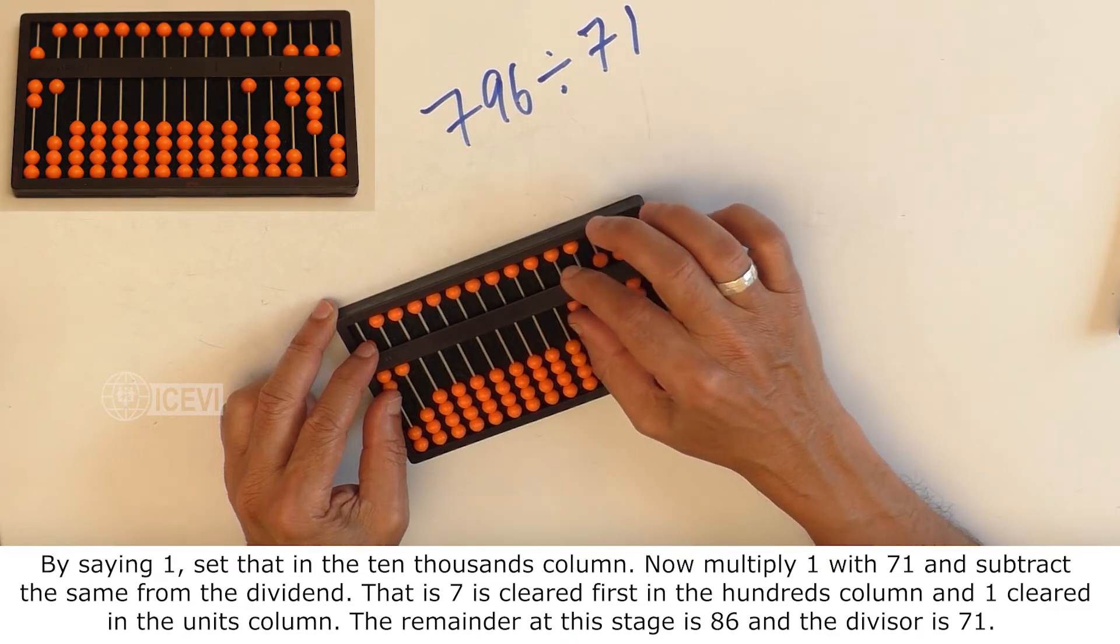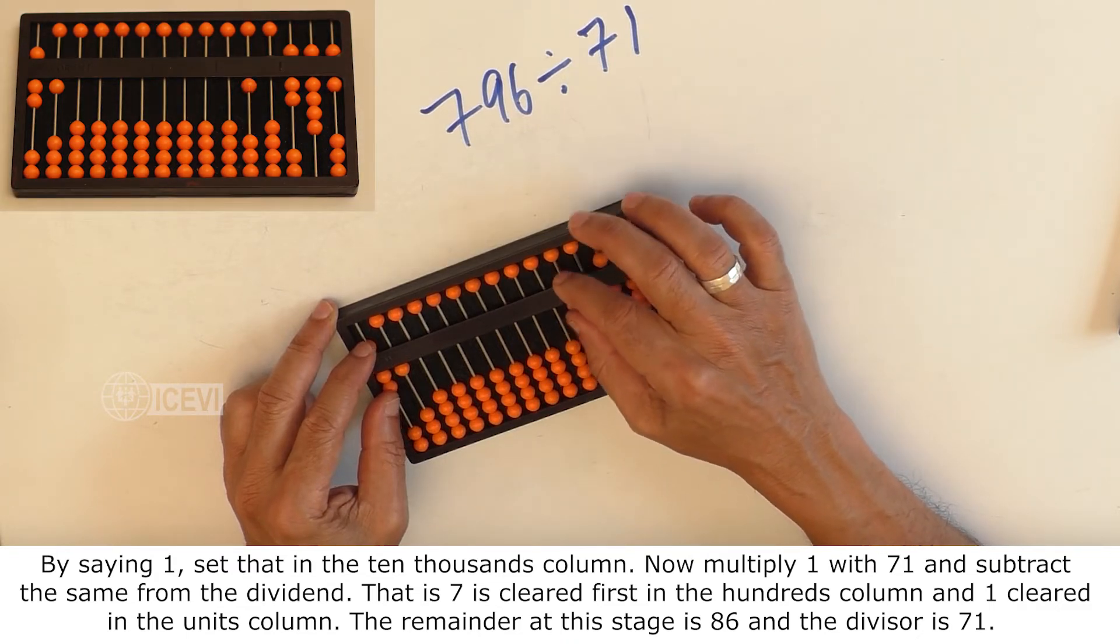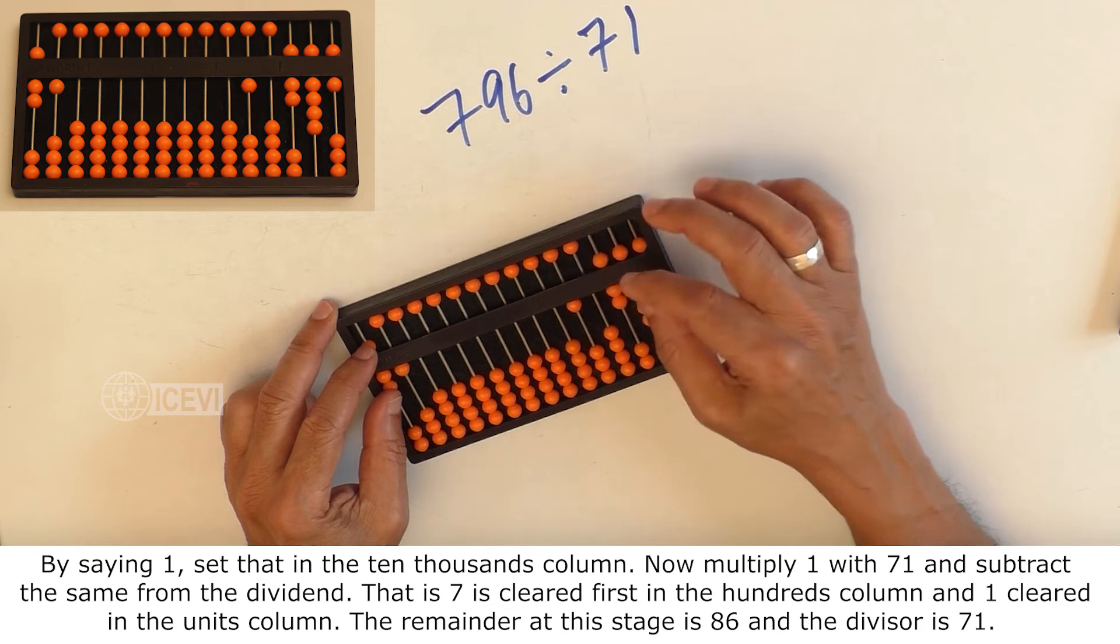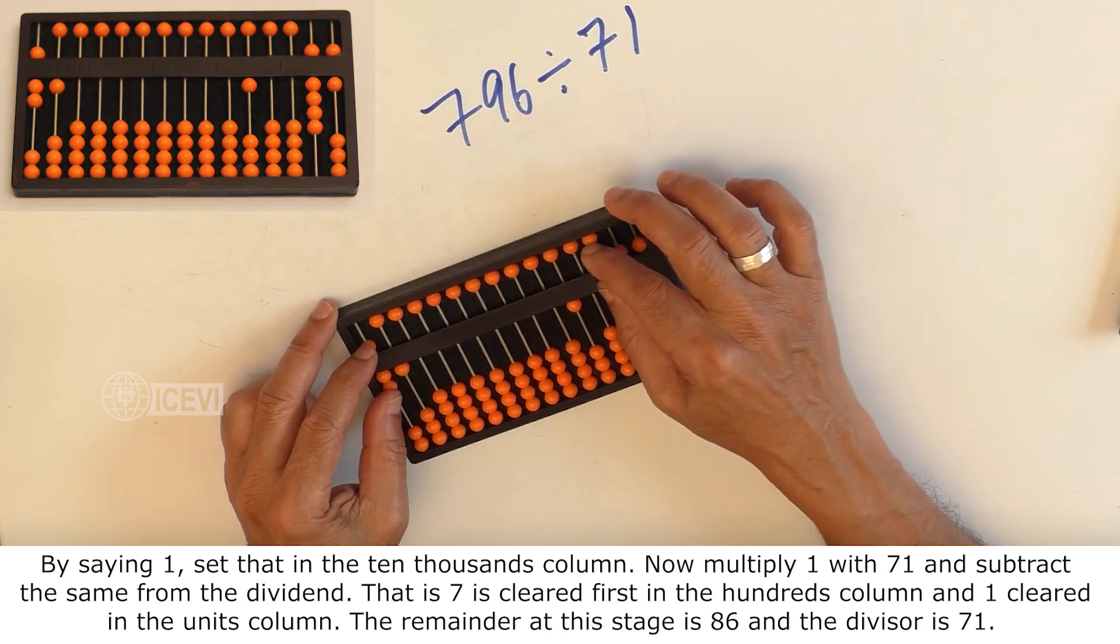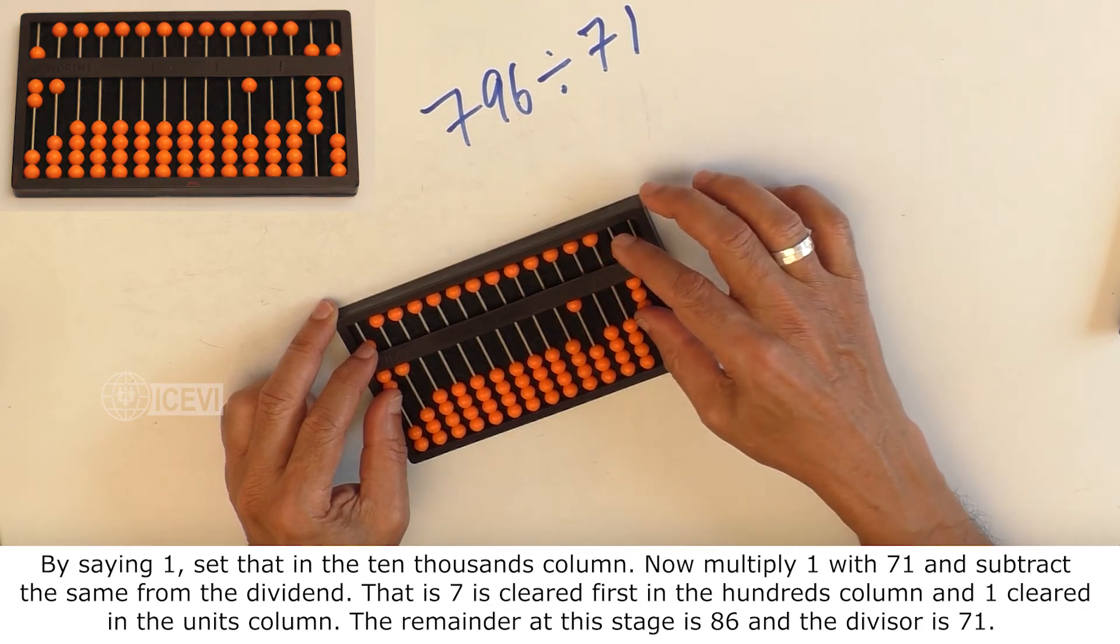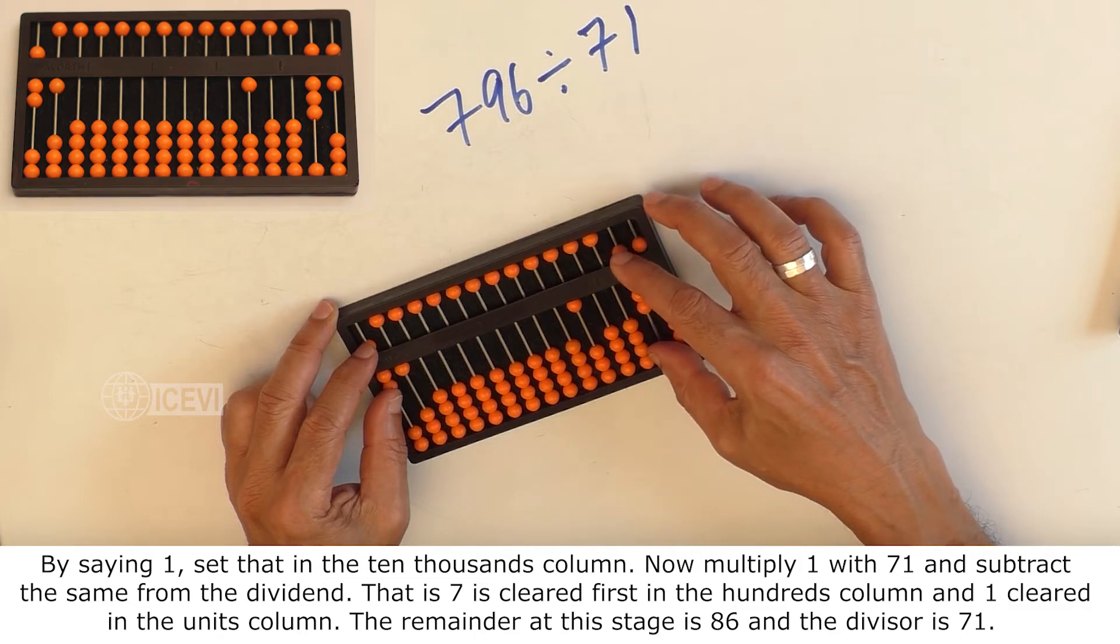Now, multiply 1 with 71 and subtract the same from the dividend. That is, 7 is cleared in the 100s column and 1 cleared in the units column.